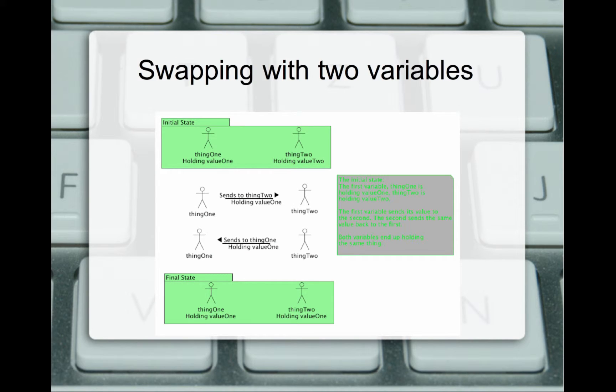We have the idea right here with swapping the two variables. If we're going to swap the two variables, we have our initial state. We have thing one and thing two. Thing one is holding value one, and thing two is holding value two. Thing one is going to send to thing two, it's going to send value one to thing two.